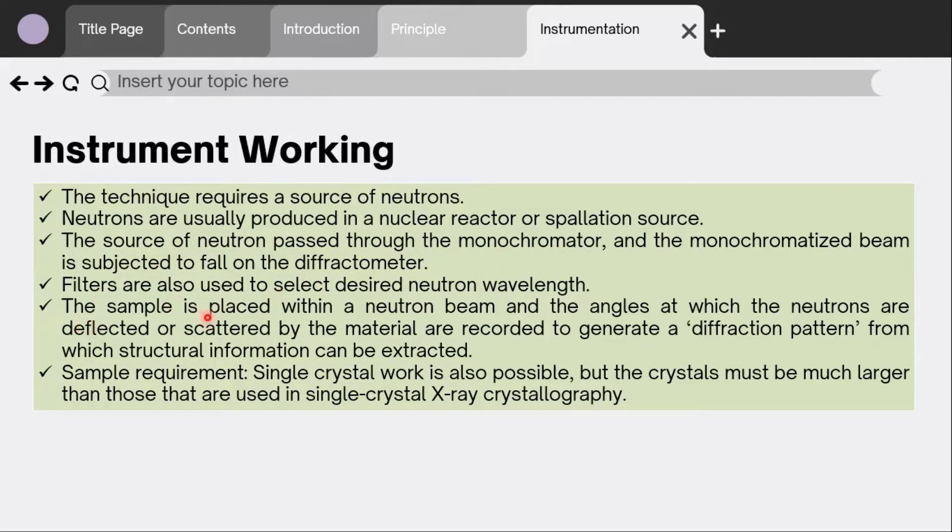Filters are also used to select the desired neutron wavelength. The sample is placed within a neutron beam, and the angles at which the neutrons are deflected or scattered by the material are recorded to generate a diffraction pattern from which structural information can be extracted.